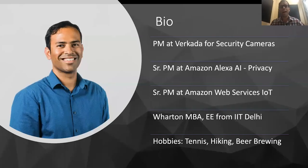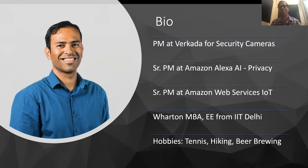A bit about me. I currently lead the product team at Workada on the security cameras product line. Before that, I spent a couple of years at Amazon — one and a half years at Amazon's Alexa AI Group working on privacy-related products and services, and two and a half years at Amazon Web Services IoT Group. I hold an MBA from Wharton and an undergraduate degree in electrical engineering from IIT Delhi. In my spare time, I love playing tennis, going hiking, beer brewing, and talking about all things technology.